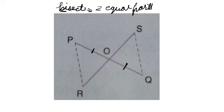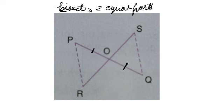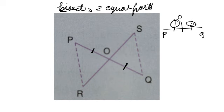If PQ is bisected at point O, then from point O to P and from point O to Q will be the two equal parts. If this is PQ, with P on one side and Q on the other and O bisecting it in the middle, these two parts will be equal. The same goes for SR as well — from point O to S is one equal part, and from point O to R is the other equal part. Point O will be called the midpoint.